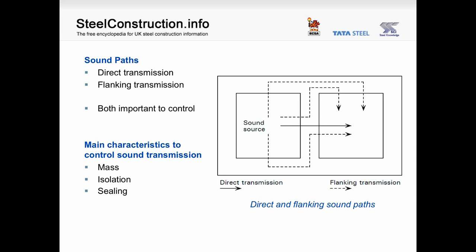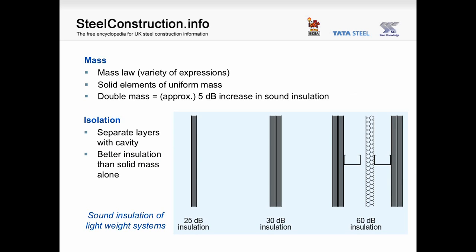There are three important characteristics to providing sound insulation within a building. The first is mass — mass helps to provide sound insulation. The second is isolation — providing separate layers of material. The third is sealing — ensuring there are no gaps at joint areas. The mass law states that the more mass provided, the better the sound insulation. However, the mass law is only really applicable to solid elements of uniform mass, and the more mass you add, the less effect it has. Each doubling in mass can be approximated to a 5 dB increase in sound insulation.